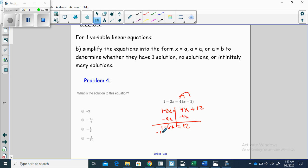Let's subtract 1 from both sides. And I've got negative 6x is equal to 11.